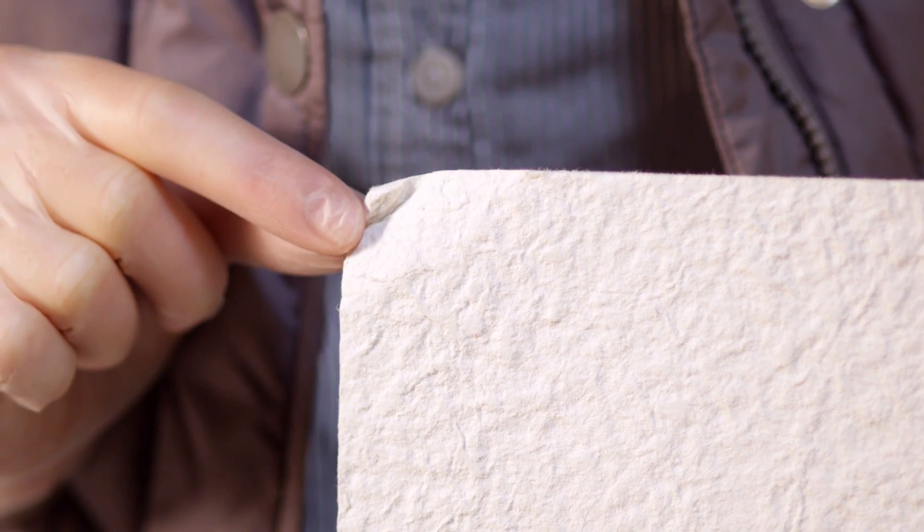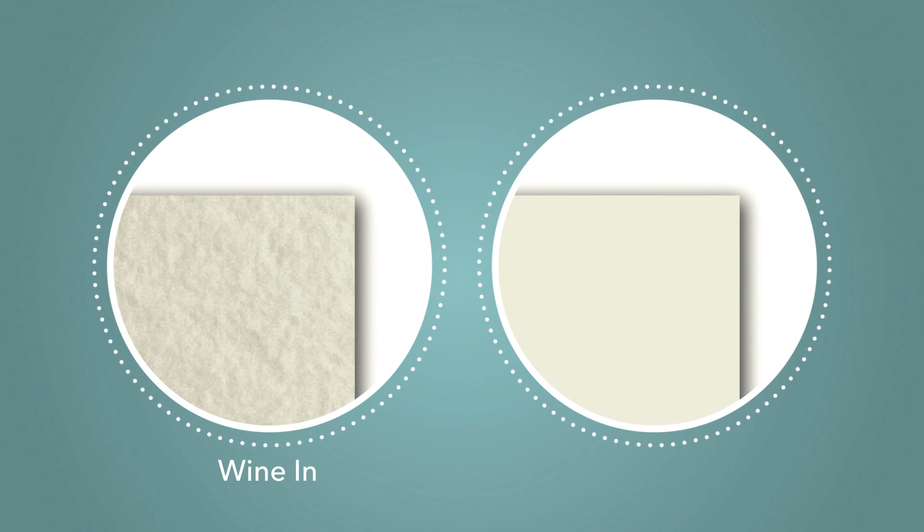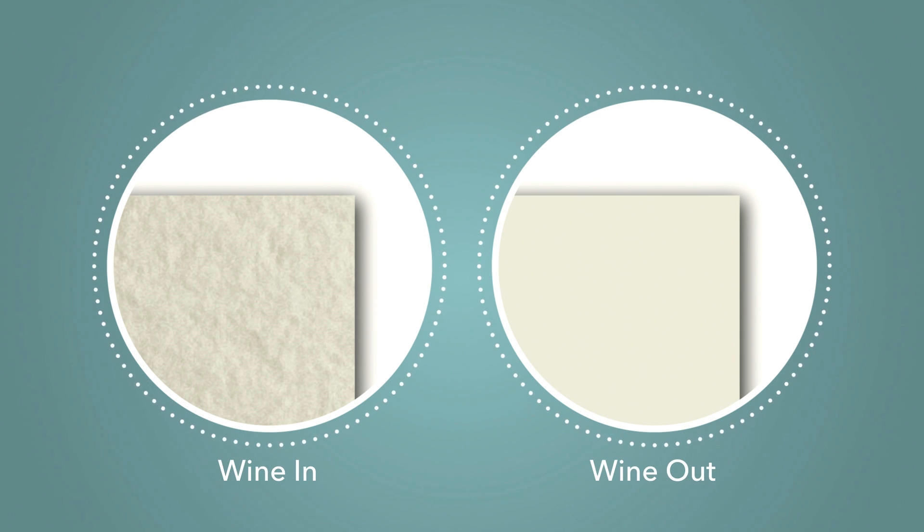Be careful not to damage corners, edges, or pads as you remove them. Damage may increase dripping during filtration. You will notice that each pad has both a rough side and a smooth side. Wine should always flow into the rough side of the pad and out of the smooth side.